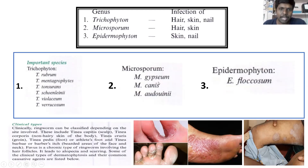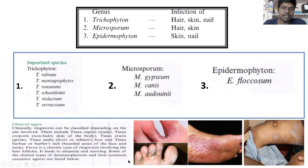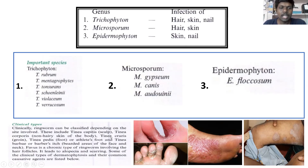Trichophyton infections can occur in different regions of the body. Infection in the non-hairy part of the skin is called tinea corporis. Tinea pedis is the infection to the foot. And tinea cruris causes infection in the groin region. Among all Trichophyton species, the most important are T. rubrum and T. mentagrophytes.